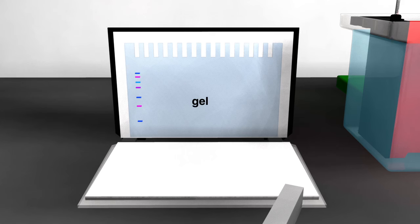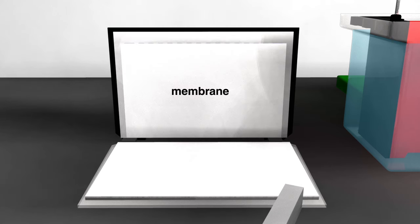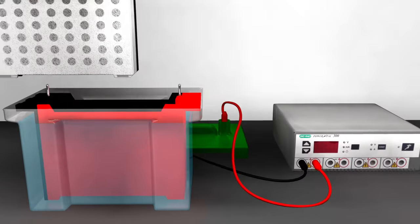Transfer is accomplished by placing the polyacrylamide gel in direct contact with a membrane made of nitrocellulose or another non-reactive material that binds to proteins and submerging both in a buffer-filled chamber.